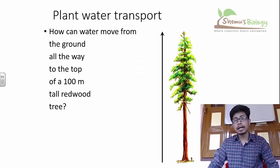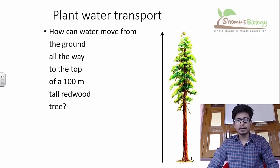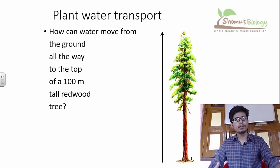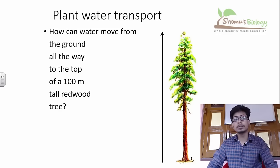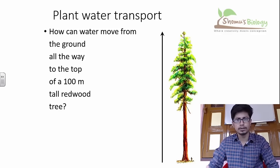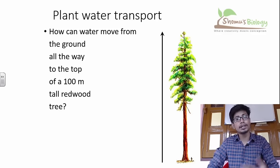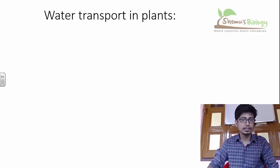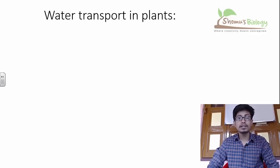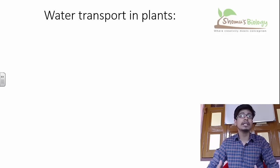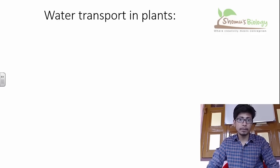There are two major physiological functions. First is the production of food using photosynthesis, and second is the uptake of water from the soil. Both are very important from the plant's perspective. We are going to talk about water and sugar transport in plants — it's stunning how large trees like redwood trees take water from the soil all the way up to 100 to 150 meters, over 300 feet tall.